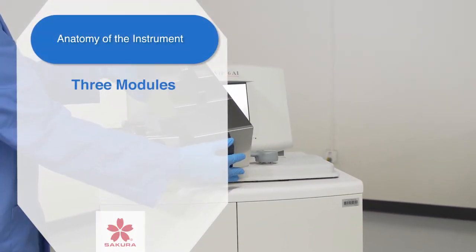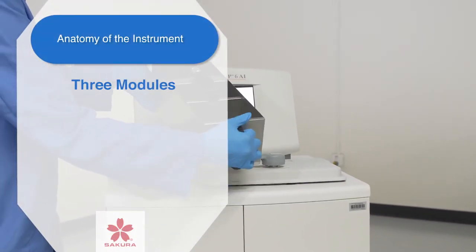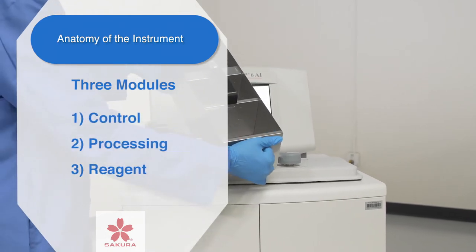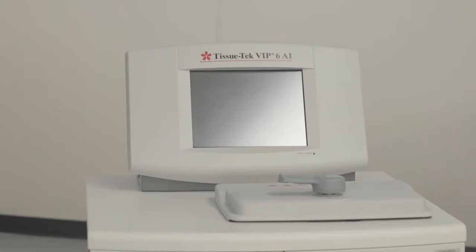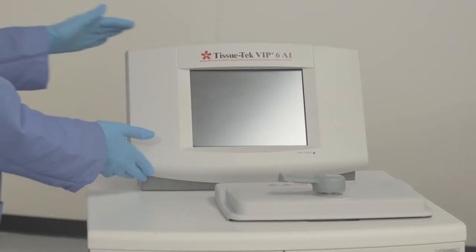The VIP 6AI consists of three modules: control, processing, and reagent. The control module provides user interface options. It receives and stores user data and is the brains of the unit.